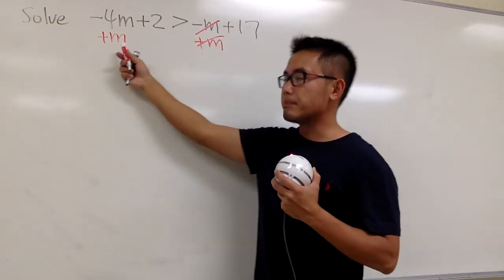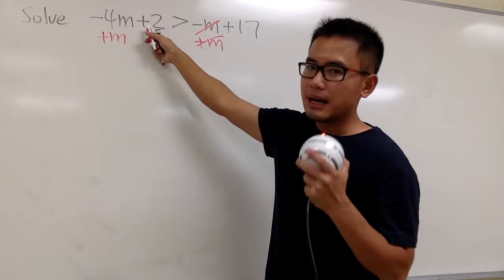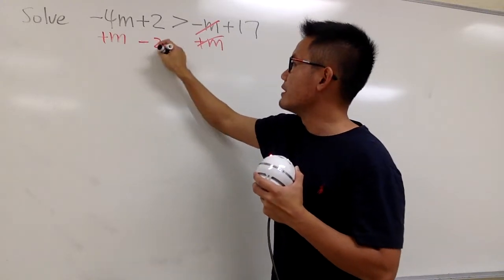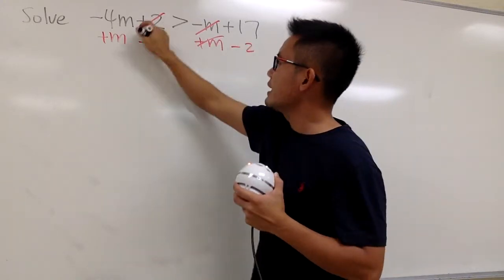So once again, I add the m on both sides. And in the meantime, this is a positive 2, so let's go ahead and minus 2 on both sides, like this and like that, so that will be cancelled.